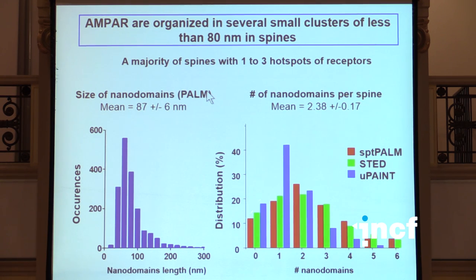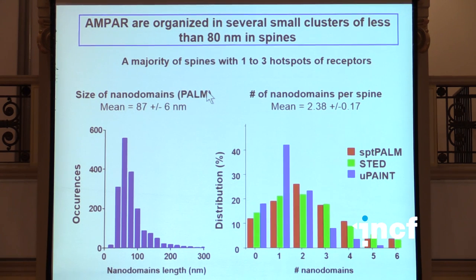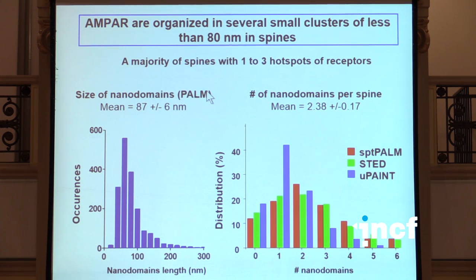What we found is the actual number of nanodomains per spine is extremely proportional to the actual overall size of the spine. When we tried to submit that data, we actually had some resistance from a variety of reviewers, because this was very different from what had been seen previously by electron microscopy data. And so it was thought that this type of organization we were seeing might be an artifact from the optical technique we were using. And so we were pressed pretty hard to use EM to look at this type of data.